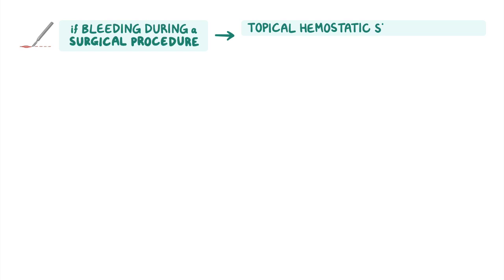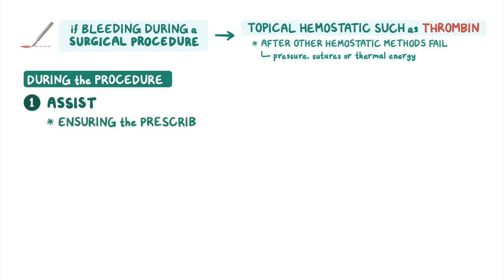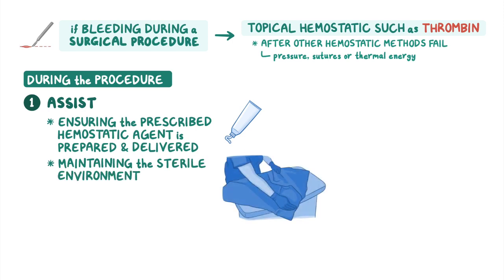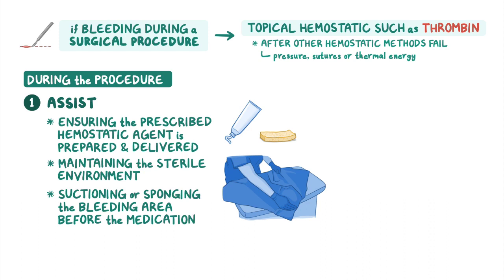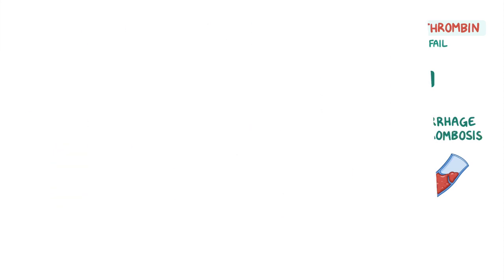If a client is experiencing uncontrolled bleeding during a surgical procedure, a topical hemostatic such as thrombin can be applied after other hemostatic methods — such as pressure, sutures, or thermal energy — fail to achieve complete hemostasis. Assist the surgeon by ensuring the prescribed hemostatic agent is prepared and delivered while maintaining the sterile environment. Assist with suctioning or sponging the bleeding area before applying the medication, and post-operatively monitor for signs of hemorrhage and thrombosis.